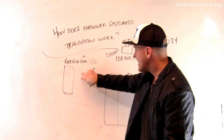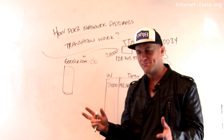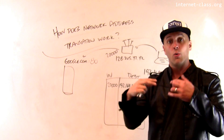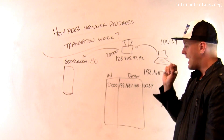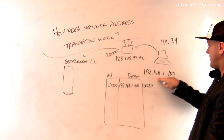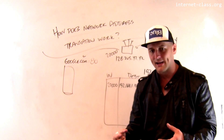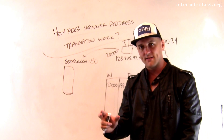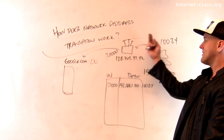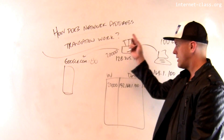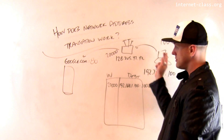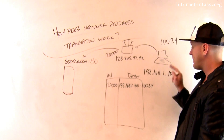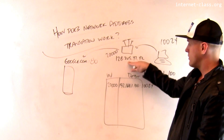When Google sends data back, it's actually sending data to this router — and that's possible because the router has a public IP address. When the packet arrives at the router, the router says: I see an incoming packet for a connection on port 2,000. It looks it up in this table and says: I remember that I set up a connection on port 2,000 for this node connected to me that has a private IP address. So it takes that packet, removes port 2,000, replaces it with port 10,024, removes its destination IP address, and replaces it with 192.168.1.100, and sends it on to me.